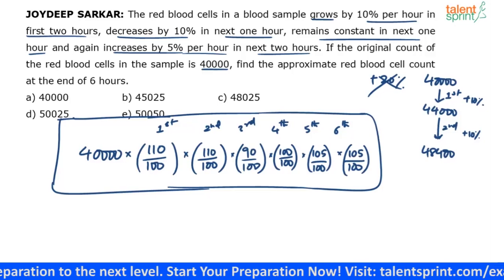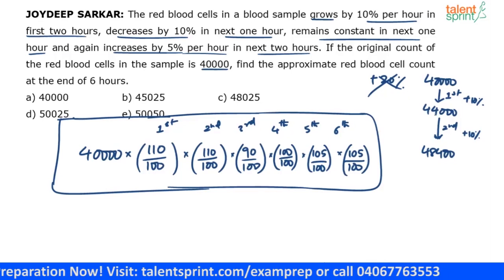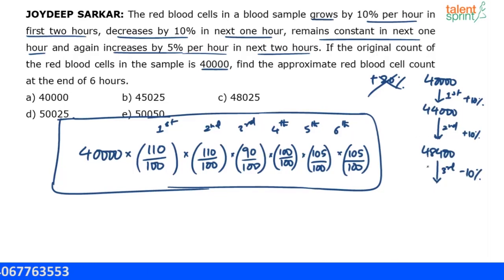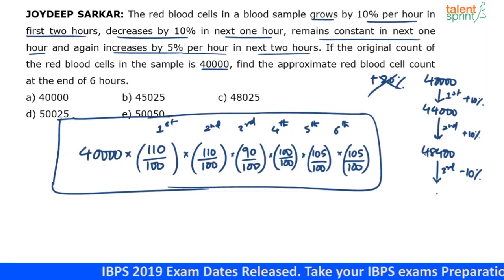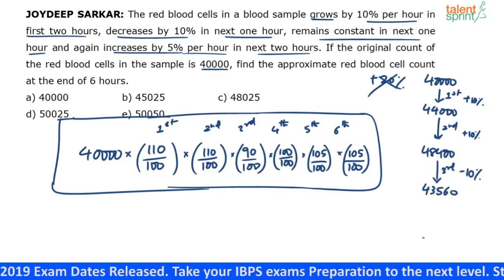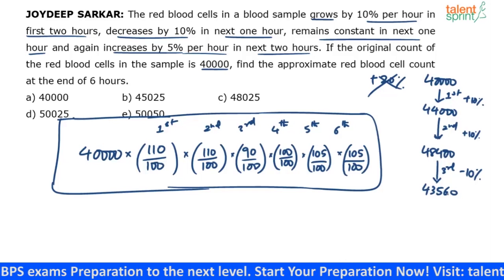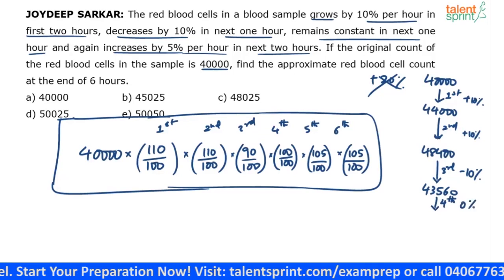Without pen on paper: 40,000 becomes 44,000 after a 10% increase. Next hour, 10% of 44,000 is 4,400, so 44,000 + 4,400 = 48,400. In the third hour it decreases by 10%. 10% of 48,400 is 4,840, so 48,400 − 4,840 = 43,560. In the fourth hour it remains the same — 0% change — so it stays at 43,560.